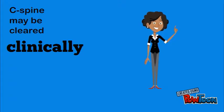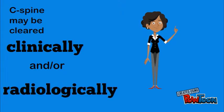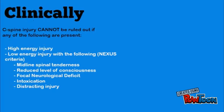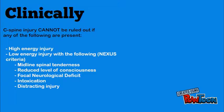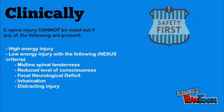C-spine may be cleared clinically and/or radiologically. C-spine injury cannot be ruled out if any of the following are present: high energy injury, or low energy injury with midline spinal tenderness, reduced level of consciousness, focal neurological deficit, intoxication, or distracting injury.